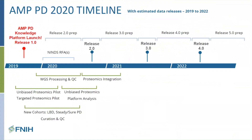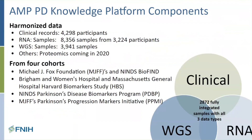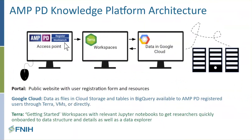This slide summarizes the AMP PD timeline, and what I'd like to draw your attention to is what we have planned for the future. This includes adding unbiased and targeted proteomics data to AMP PD, as well as clinical and genomic information from several more study cohorts — so there's more to come. Right now, the platform contains longitudinal clinical records and RNA samples, which is one unique aspect in itself, all coming from four large cohort studies. The platform structure includes the portal, the Terra workspaces, and data existing in the Google Cloud.